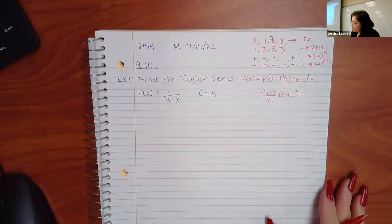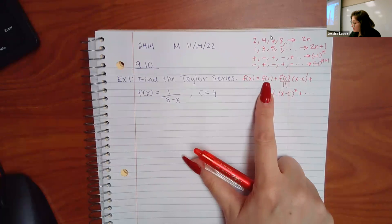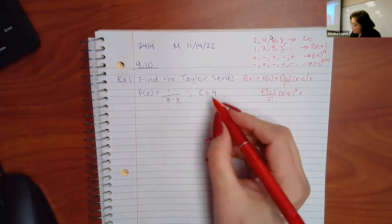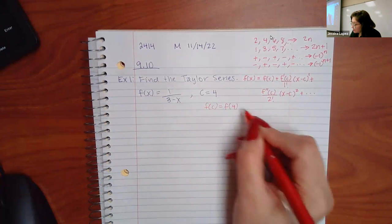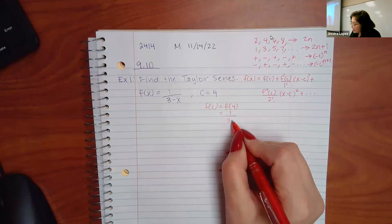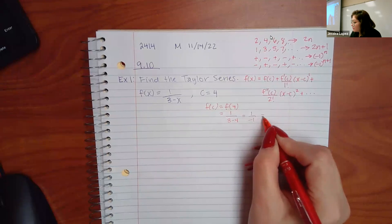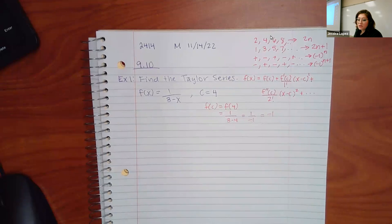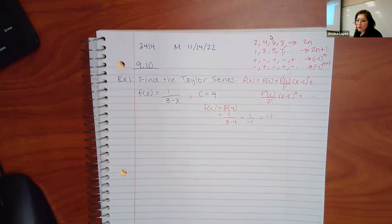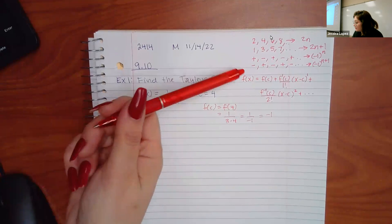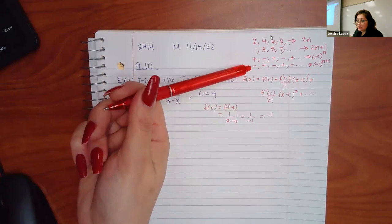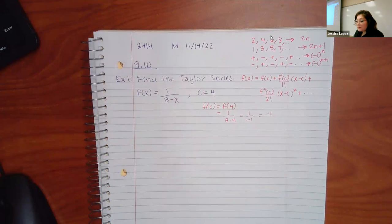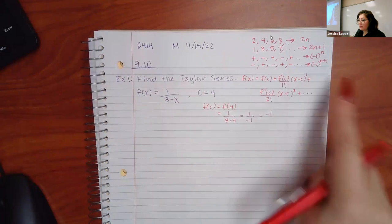The first thing I need to figure out is F(C). In this case C is 4, so that would be 1 over (3 minus 4), which is 1 over negative 1, or just negative 1. So I already know my first term is going to be negative 1. If the signs are oscillating — if the next one is positive — I'm probably going to have the alternating sign situation. Or if all of them are negative, it's all negative.